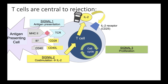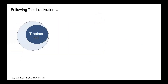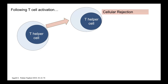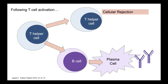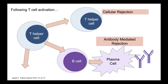Following T-cell activation, a couple of things can happen. The T helper cell can go to the graft and cause cellular rejection — drawing in cytotoxic T cells and other parts of the immune system. Alternatively, the T helper cell can promote B cells to turn into plasma cells, which produce antibodies, leading to antibody-mediated rejection. Antibodies bind to their target and draw in complement or immune cells.